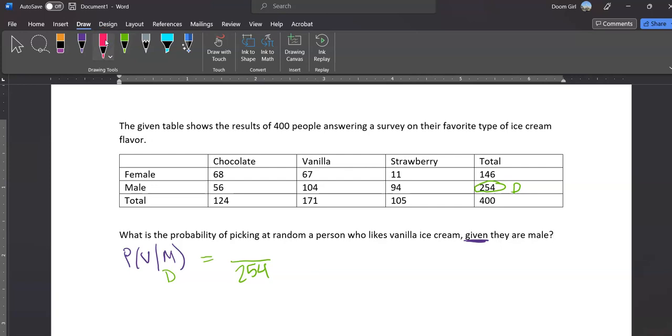Now, out of those 254 males, how many like vanilla ice cream? That is the numerator. We've got to keep going. Out of this row right here, how many like vanilla? 104 of those people. So 104 out of 254.